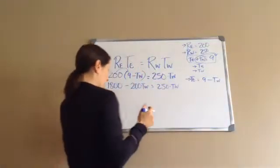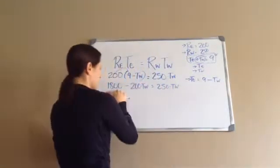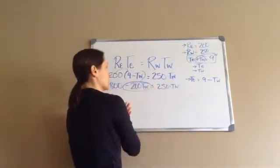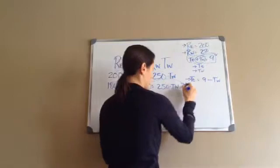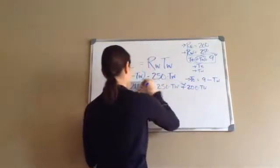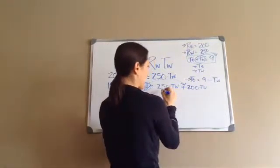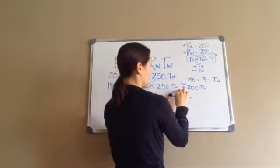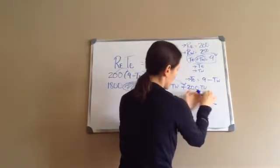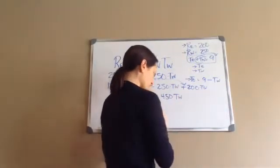And so now I'm going to go in and get the Tws on one side and the numbers on the other side. Since the numbers on this side, I'm going to want to put the Tws on this side. So this minus 200 Tw goes across the equal, and it becomes plus 200 Tw. Now I've got 1800 equals, and I'm going to go in and add our like terms, 250 Tws plus 200 Tws, so this would be 450 Tws.